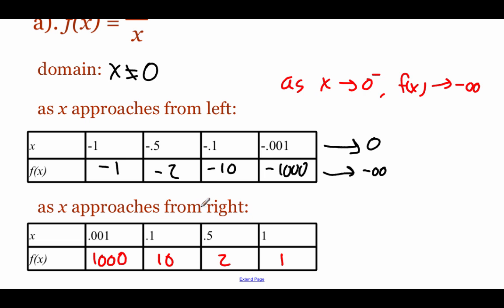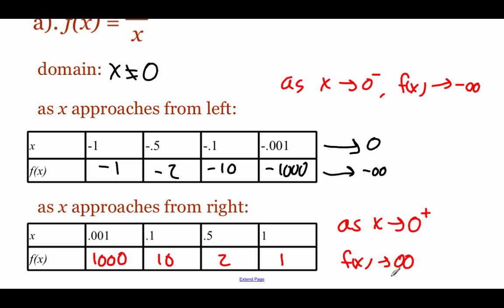Describing this: as our x value approaches zero from the right-hand side — the little plus sign means from the right — our f of x values are approaching positive infinity. As our x values get closer and closer to zero, these y values keep getting bigger.